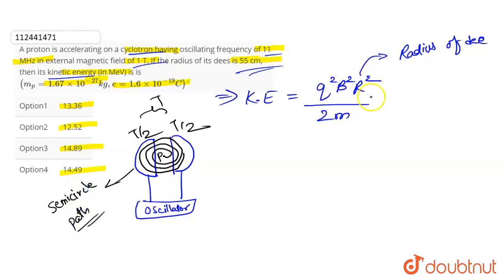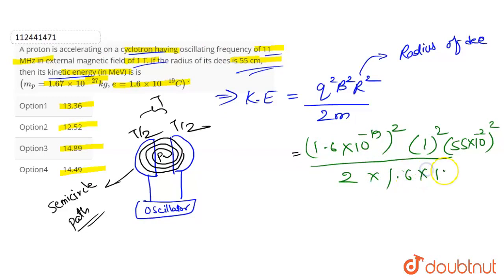Here is the formula for kinetic energy. Here are the values: charge is 1.6 into 10 to the power minus 19 whole square. Here is magnetic field, 1 square. D radius - converting centimeter to meter - 55 into 10 to the power minus 2 square. Here is mass given: 1.67 into 10 to the power minus 27 kg.